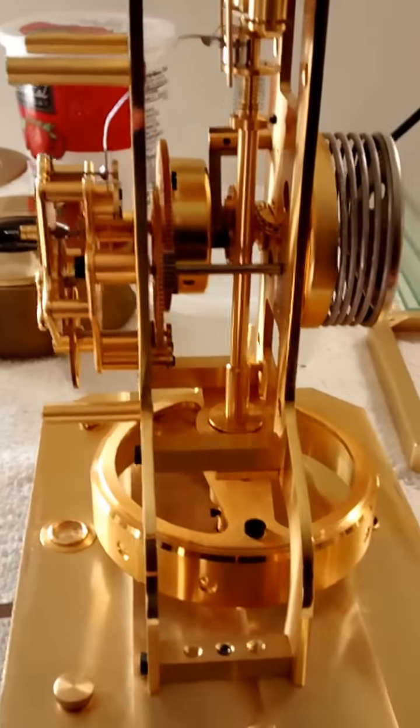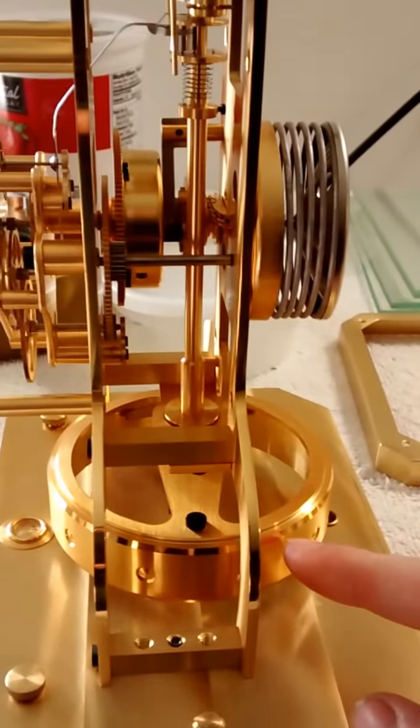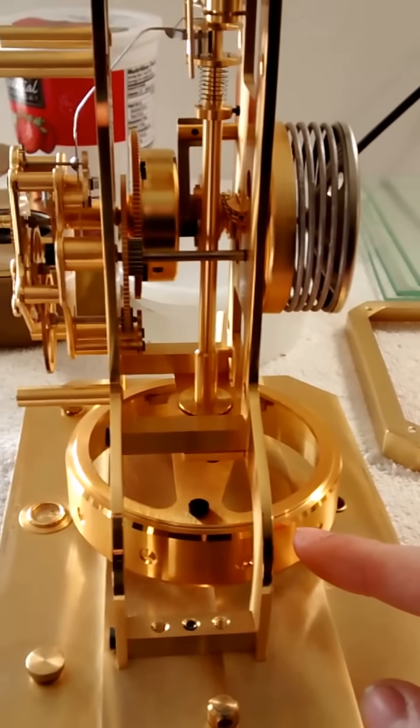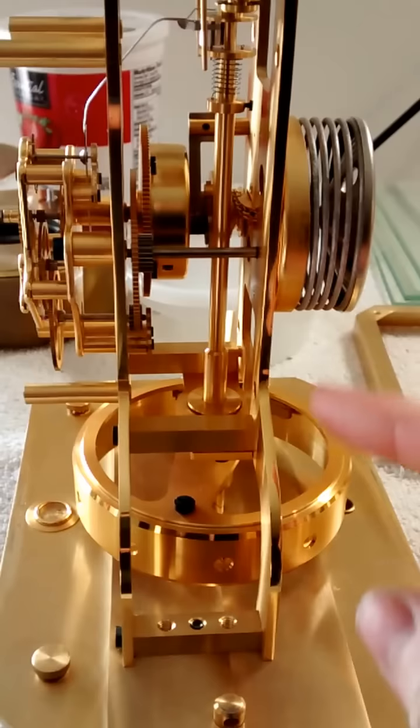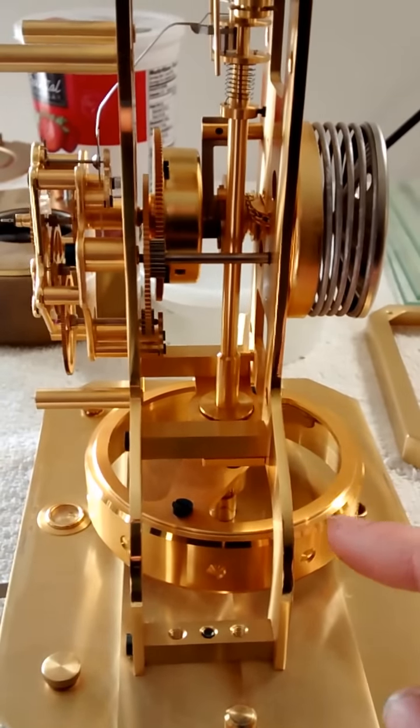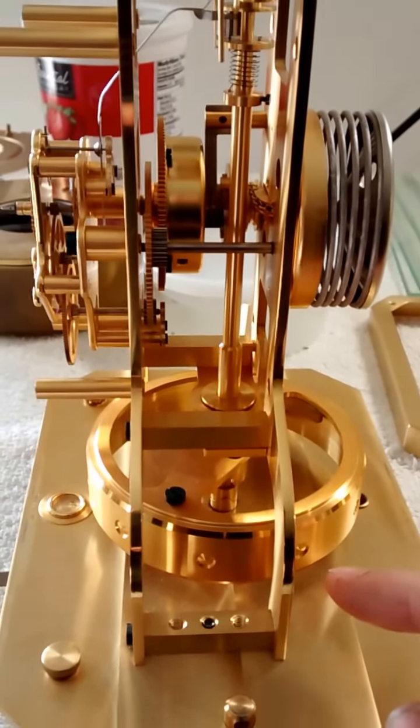But first we've got to identify a couple parts. This wheel down here at the bottom, it's called the balance wheel. A lot of people call it a pendulum. On this style of clock, torsion clock like this, you don't really call it a pendulum. You call it a balance.